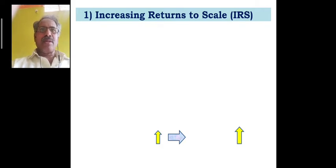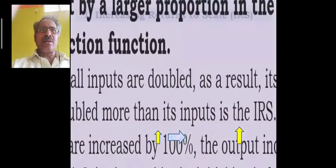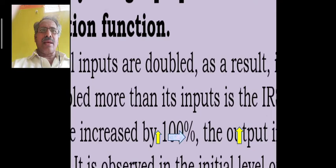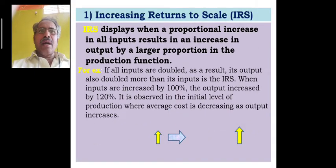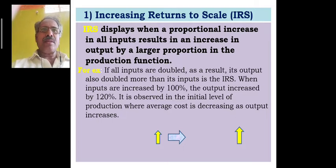First is Increasing Returns to Scale. Under Increasing Returns to Scale, it displays when a proportional increase in all inputs results in an increase in the output by a larger proportion in the production function.